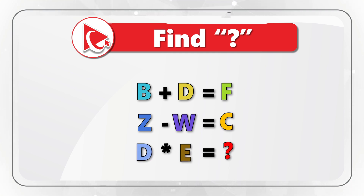To solve this, you need to analytically understand that you can assign a number to each letter of the alphabet. There are 26 letters: A, B, C, D, and so on. Letter A is assigned number 1, B is 2, C is 3, D is 4, E is 5, continuing up to Z which is 26. With this cross-reference, we can convert between letters and numbers.